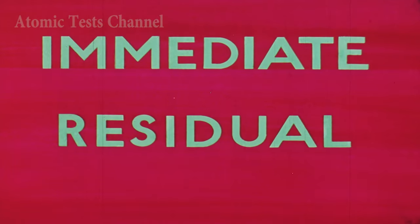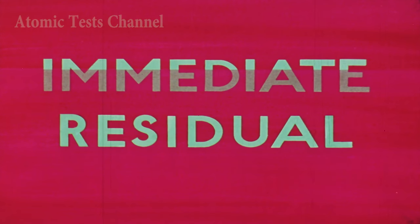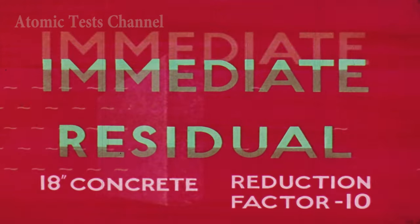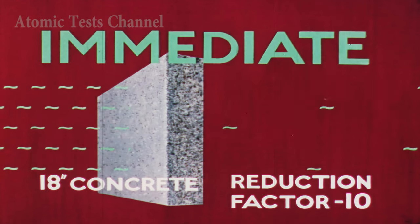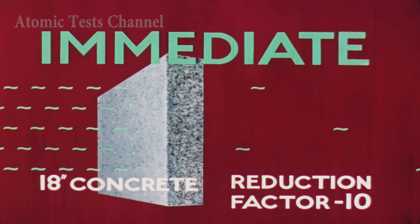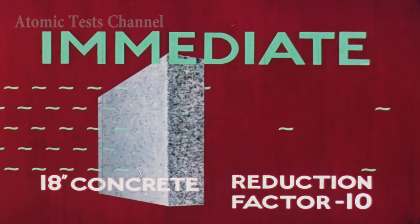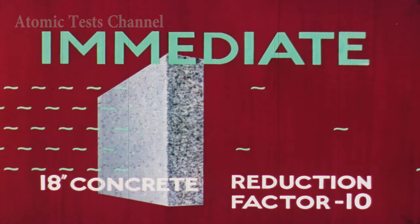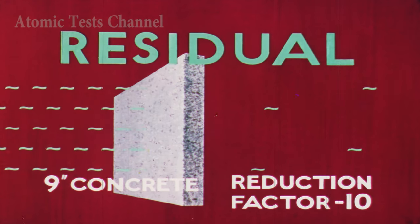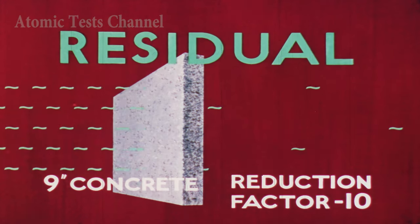The penetrating power of immediate radiation is greater than that of the residual radiation. With immediate radiation, for example, a reduction factor of 10 is provided by 18 inches of concrete. With residual radiation, the same reduction factor of 10 can be obtained by only 9 inches of concrete.